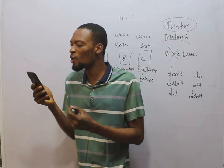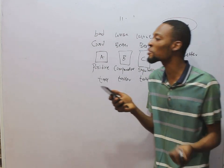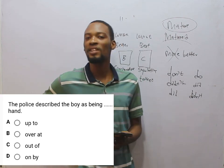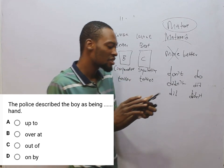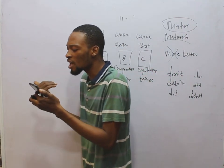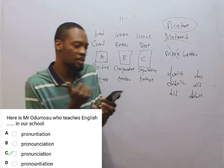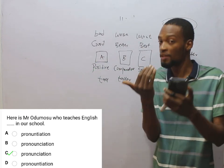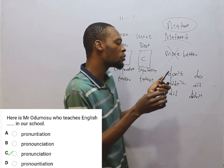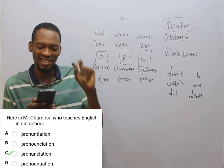The police describe the boy as being dashed hand — the answer is out of hand, meaning this boy is very stubborn and uncontrollable. People say it commonly: John has gone out of hand. So the police describe the boy as out of hand is correct. Mr. Odumosu teaches English pronunciation in our school — this tests your spelling. To spell pronunciation: P-R-O-N-U-N-C-I-A-T-I-O-N. That is the correct spelling, as seen in option C.